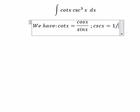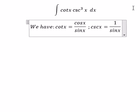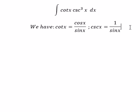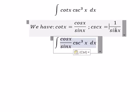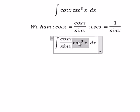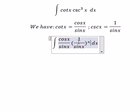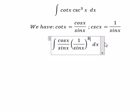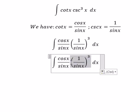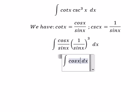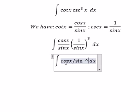We substitute these identities here, so we get cosine x over sine x to the power of 4.